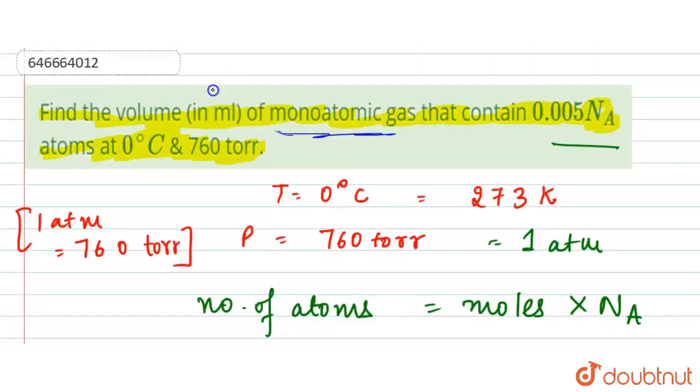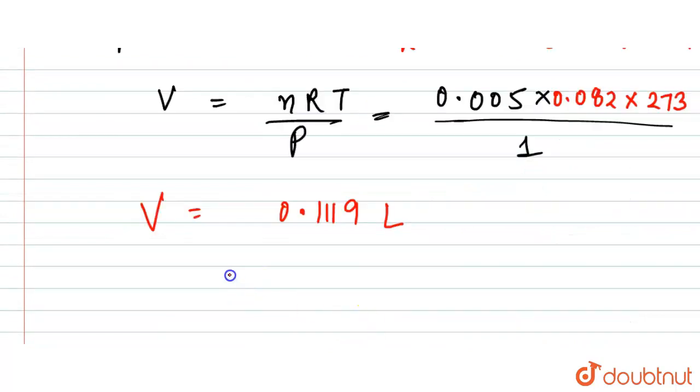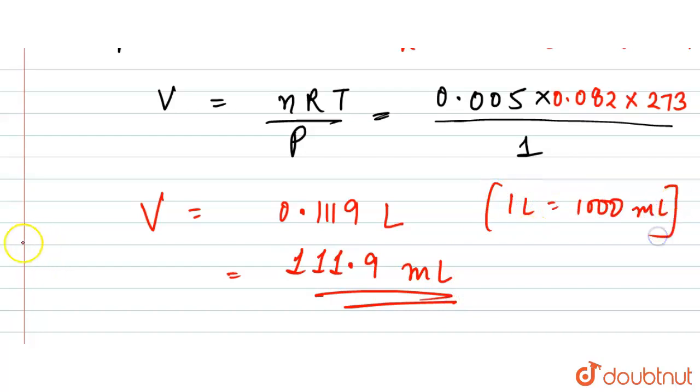So here we have to find in milliliters. So in milliliters it will be, here we will have 112 ml, because here one liter is equal to thousand ml. So this is our answer.